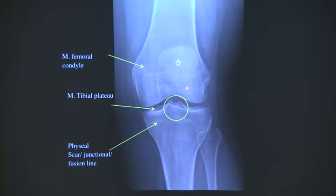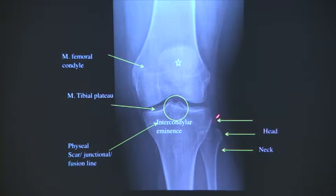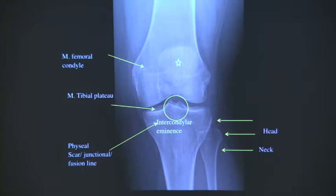The intercondylar eminence. Good, very good. Fibular neck, fibular head, and this one is the tip here - how do you call the tip in all the bones? You see it in other styles? Fibular styloid - okay, very good. That's the lateral tibial plateau. How do you call this concavity here in the lateral tibial canal? That's the lateral condylar groove for the popliteus. Correct - popliteus groove, or popliteus sulcus.